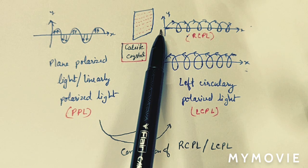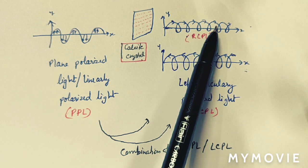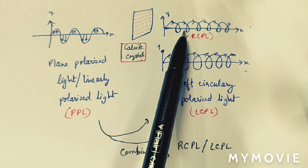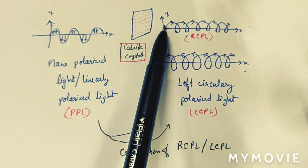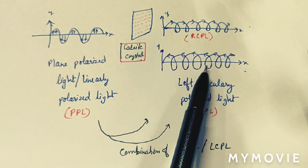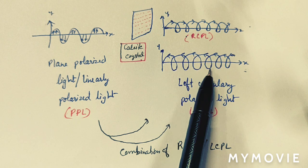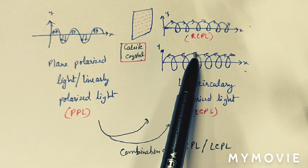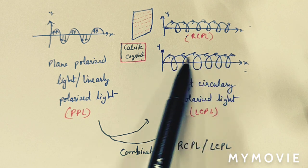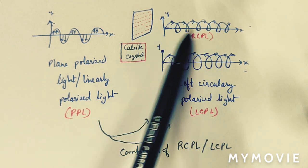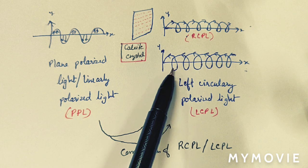In circularly polarized light, the wave propagates in the form of a helix. If the helix goes towards the right direction, it is right circularly polarized light. If the helix tends towards the left side, it is left circularly polarized light. Both create circular waves but in opposite helical directions.